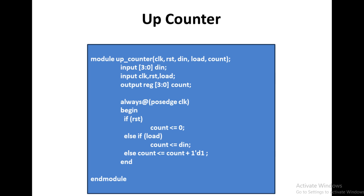This counter counts in the upward direction: 0, 1, 2, 3, 4, 5, and so on. The highest priority is given to the reset signal — if reset is high, zero is assigned to count. Then if reset is low, we check the load signal. If load is high, the data input is given to count. If both reset and load are low, the counter performs up counting: count = count + 4'd1. Finally, end module — this is a simple up counter code.